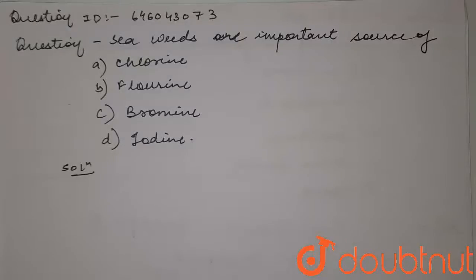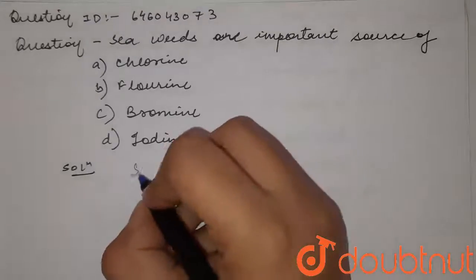Hello students, so we have a question: seaweeds are important source of a) chlorine, b) fluorine, c) bromine, and d) iodine.